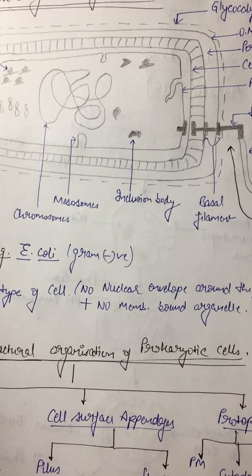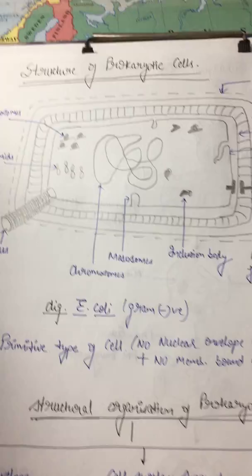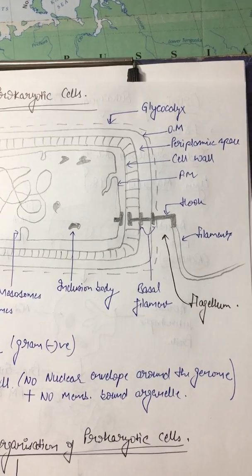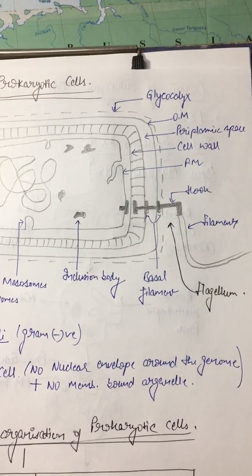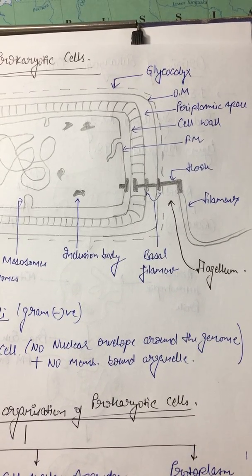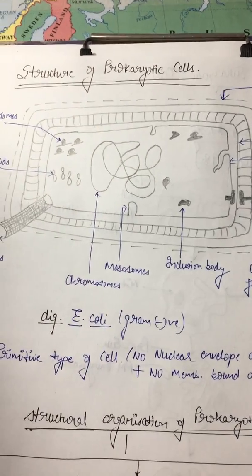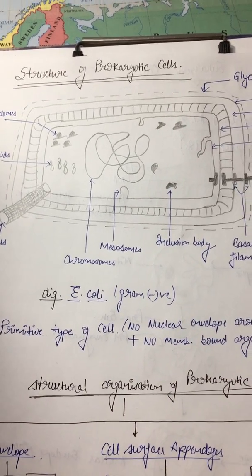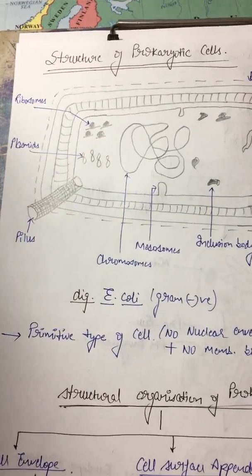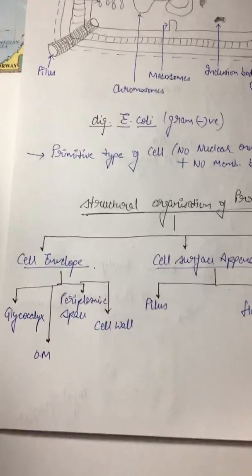It's the glycocalyx which is the outermost membrane which is present in prokaryotic cell. Then we have an outer membrane. In between cell wall and outer membrane we have periplasmic space, then we have plasma membrane. Inside the cell we have ribosomes, plasmid, chromosomes, inclusion body, basal filament, flagellum, pilus. This is a structure of gram-negative bacteria.